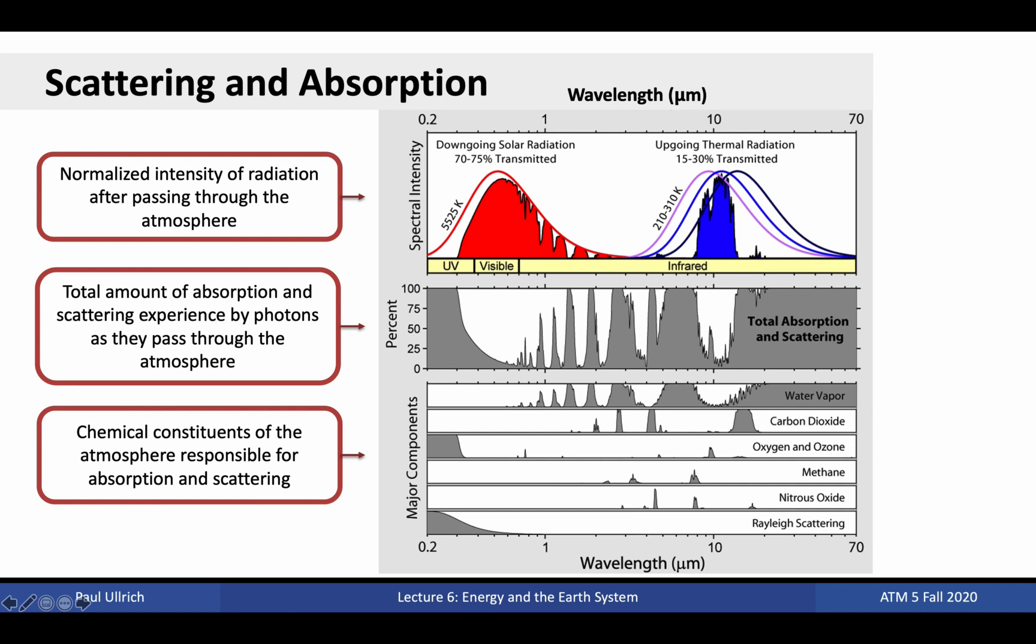The key point here is that solar radiation and terrestrial radiation come from different parts of the spectrum, and because of this there are significant differences between how solar radiation and terrestrial radiation behave as they interact with the atmosphere. About 70 percent of incoming solar radiation makes it through the atmosphere to the surface, mostly in the visible spectrum, whereas only 15 to 30 percent of outgoing terrestrial radiation makes it through, mostly in the far-infrared.